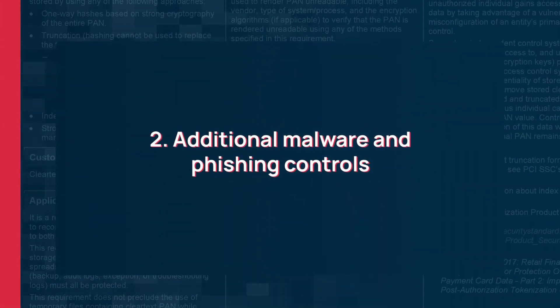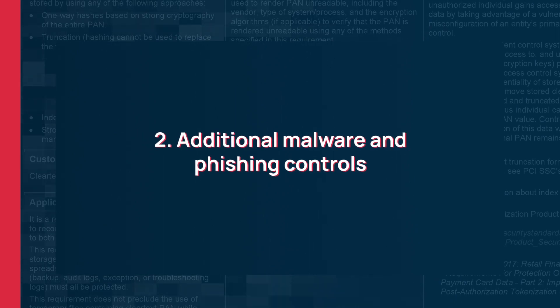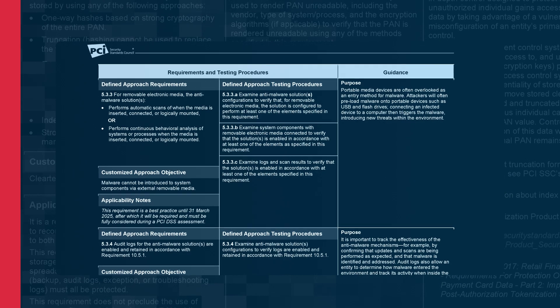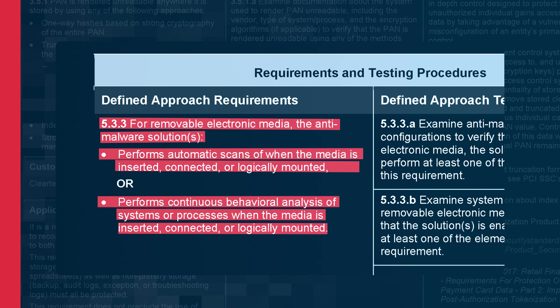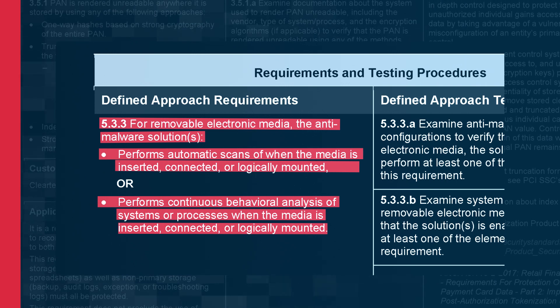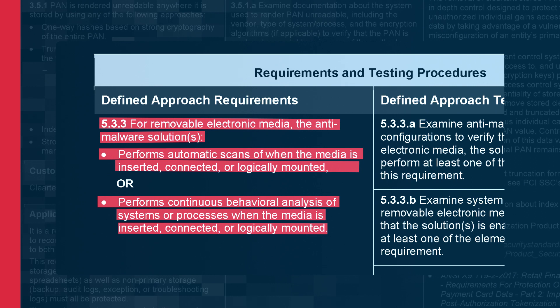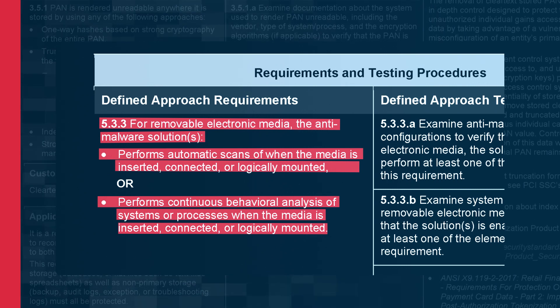Number two is about ensuring that you're protecting your systems from malware. In PCI DSS version 4, requirement 5.3.3 states that you now need to ensure you have a process in place to automatically scan devices like USB sticks as soon as they are logically mounted or inserted into devices. This should be available as part of an endpoint protection solution to make sure you're not inserting any malicious devices that could be delivering malware or a virus into your network.